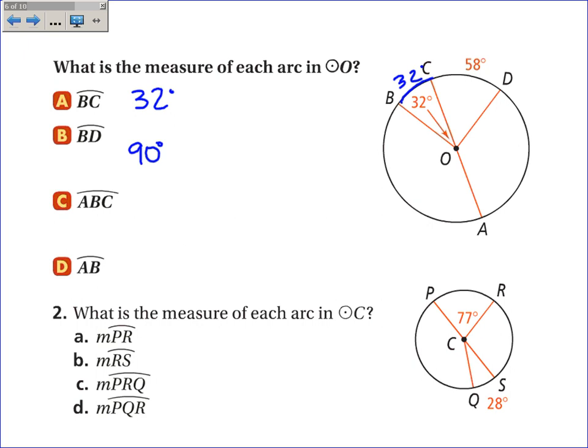Arc ABC is a semicircle, so it's 180 degrees. And arc AB, let's see here. ABC is 180 degrees. Now, I don't want to include BC. So if I subtract that, I'm left with 148. So arc BA is 148 degrees.